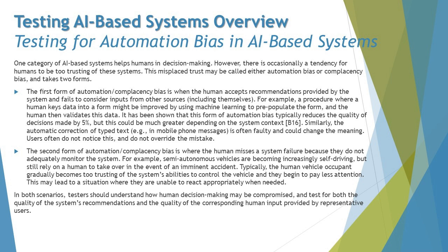It has been shown that this form of automation bias typically reduces the quality of decisions made by five percent, but this could be much greater depending on the system context. Similarly, automatic correction of typed text — such as auto-suggest or autocomplete on mobile phones — is often faulty and could change the meaning. Users often do not notice this and do not overwrite the mistake, leading to typos or errors in messages and emails.